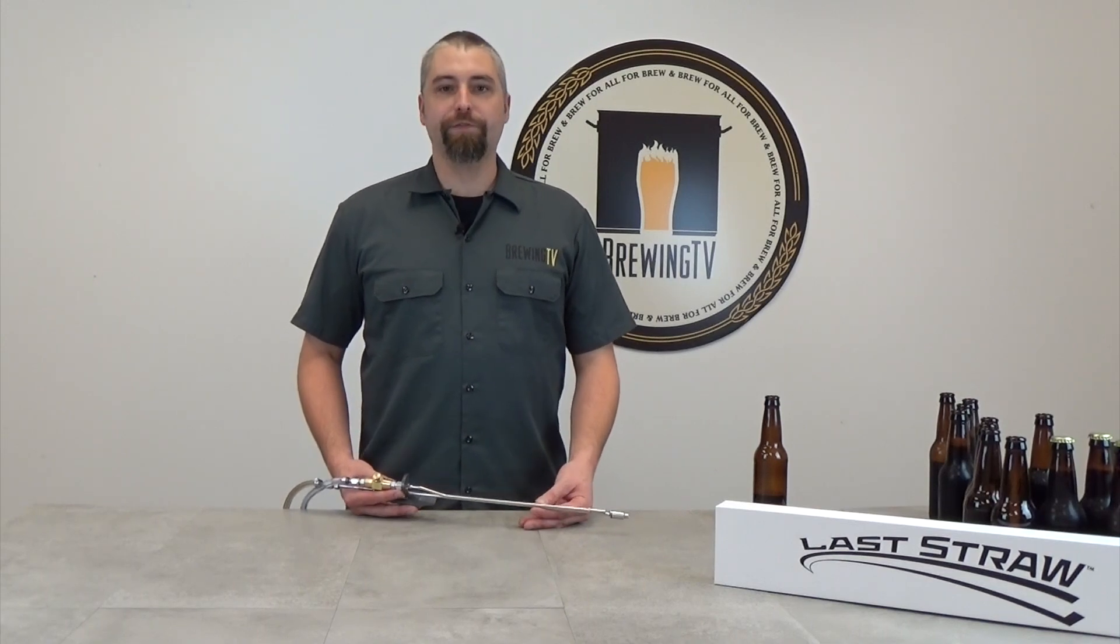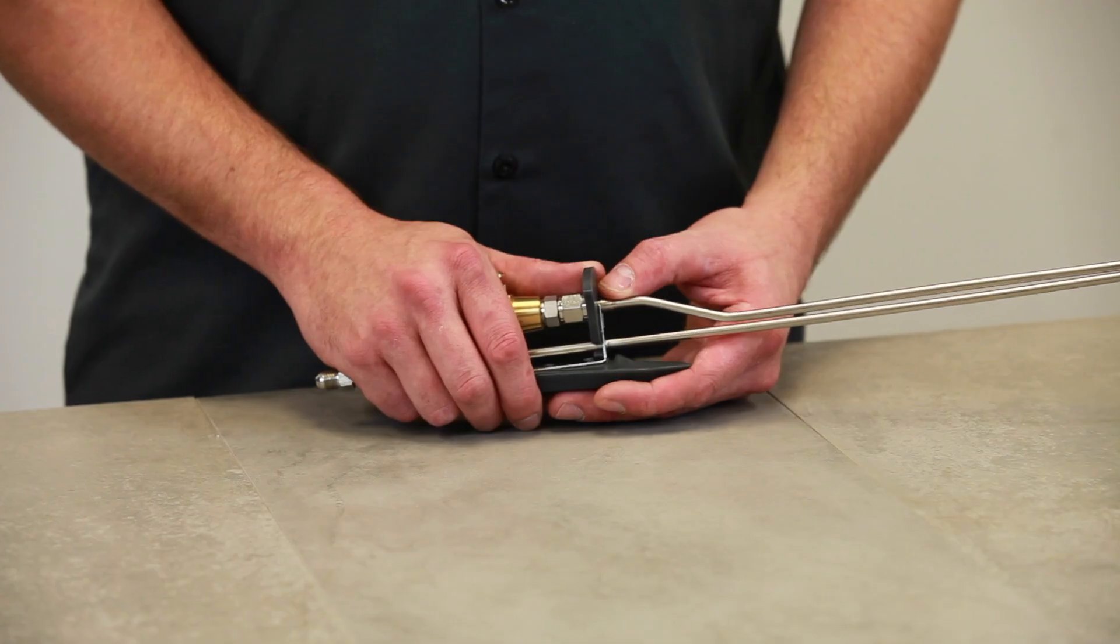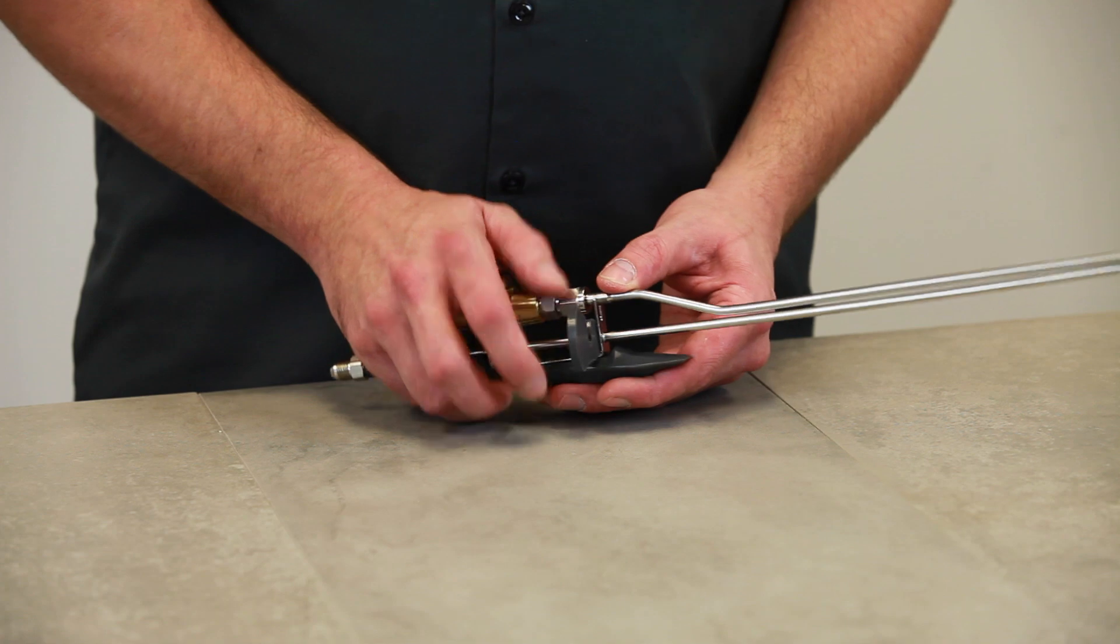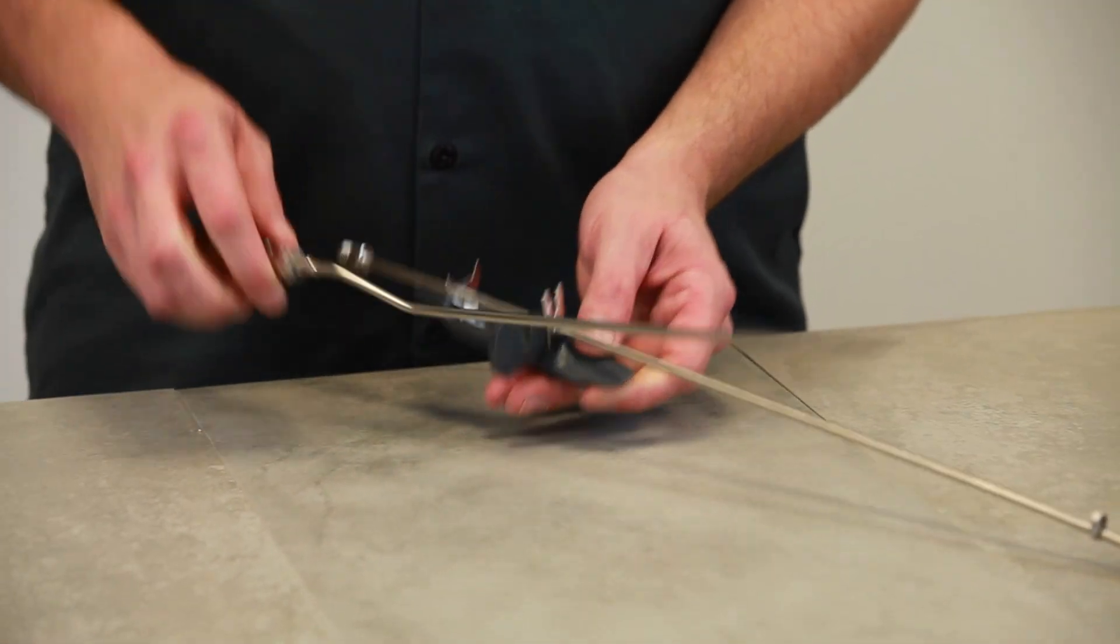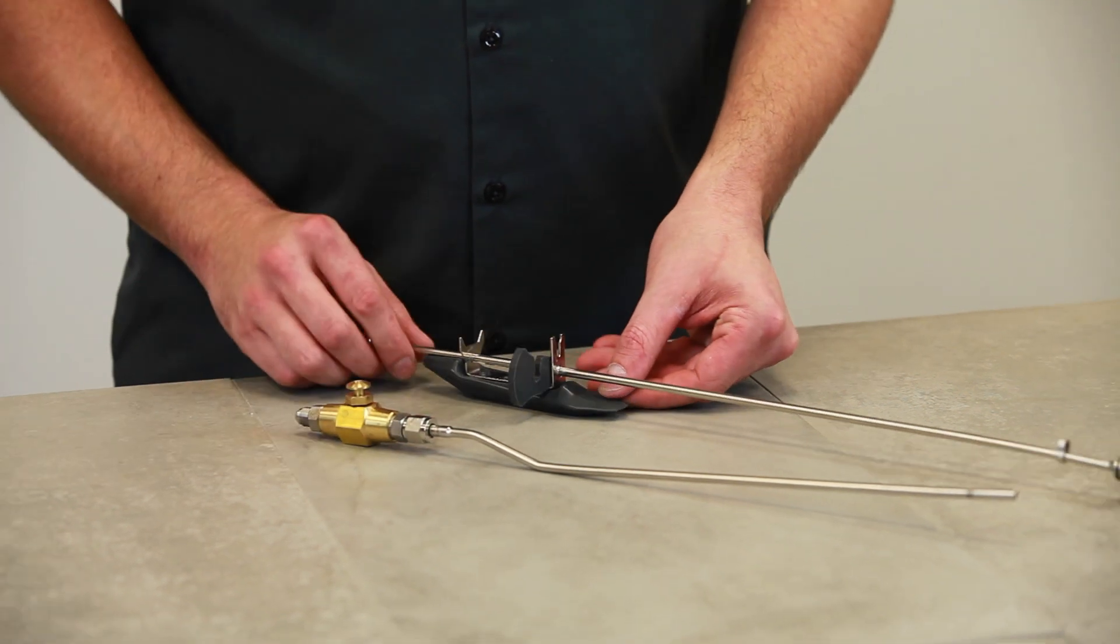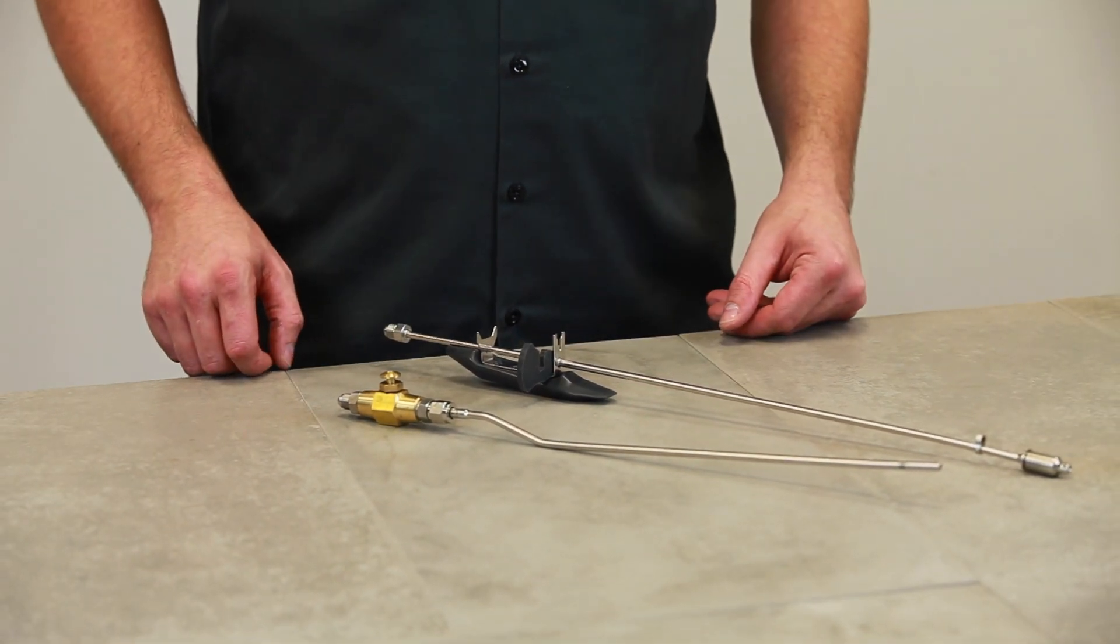Now let's talk about every brewer's favorite task. Cleaning. To disassemble the Laststraw, first swing the locking latch to the side to detach the two halves of the filler. Then simply lift up on the CO2 purging assembly and gently slide it out of the retaining clip towards the filler.